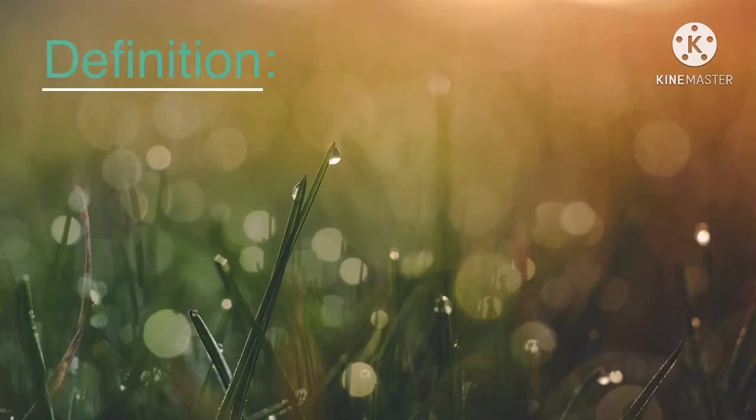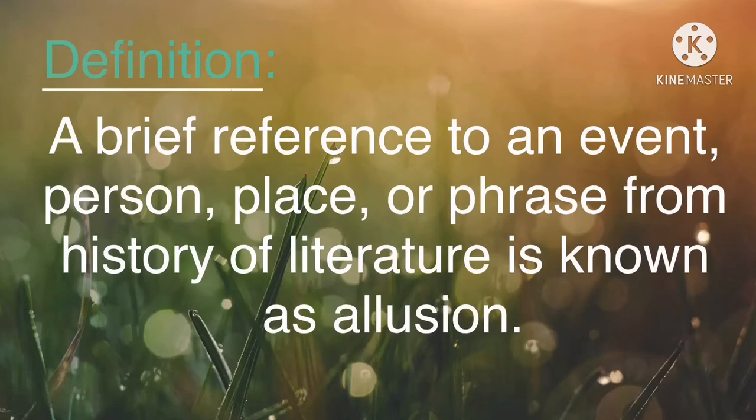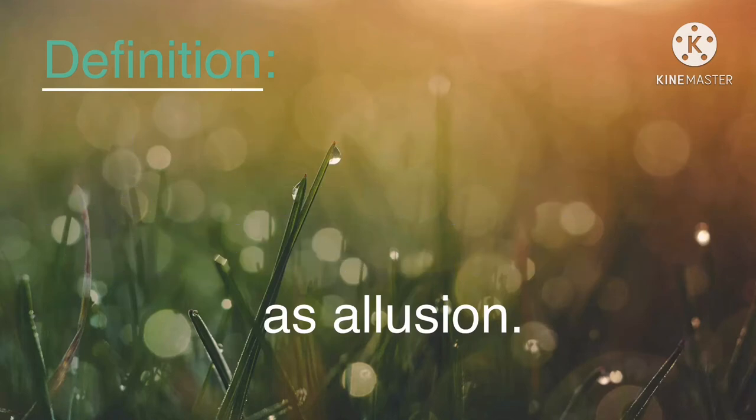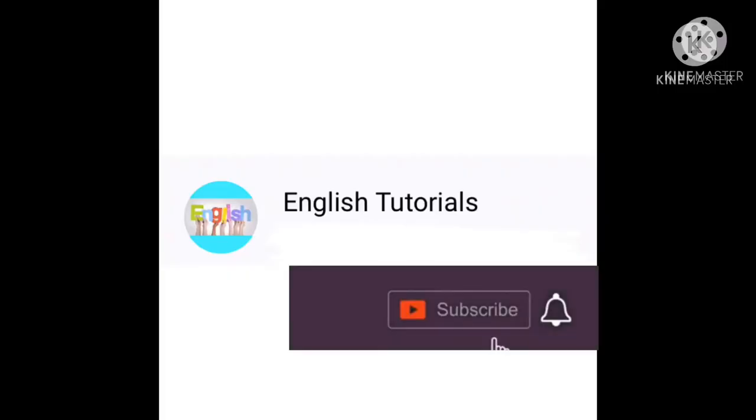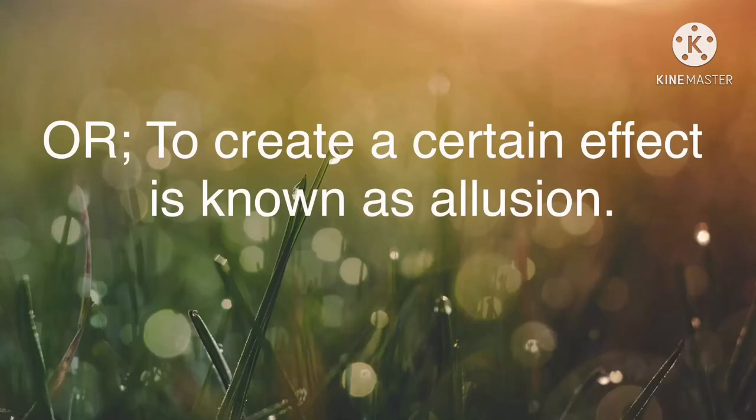Let's explore. Allusion is a brief reference to an event, person, place, or phrase from the history of literature. It's known as allusion and is used to create a certain effect, a type of effect which has validity, meaning to create a valid effect.